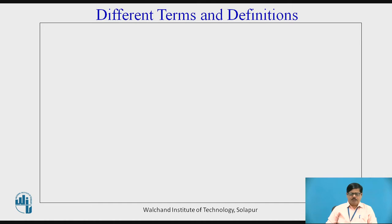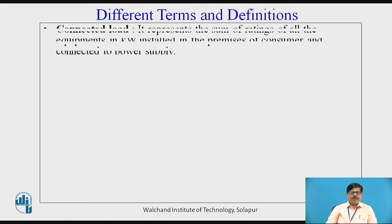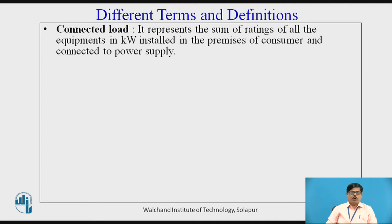Firstly, we will try to understand the various terms and definitions in connection with power plant performance. The first term we are going to discuss is the connected load. Connected load represents the sum of ratings of all the equipment in kilowatts installed in the premises of a consumer and connected to the power supply.